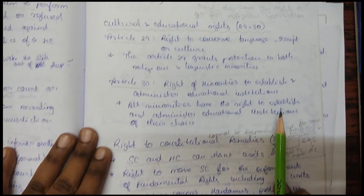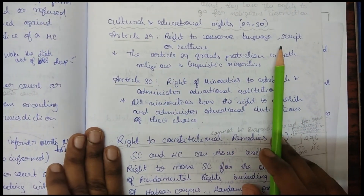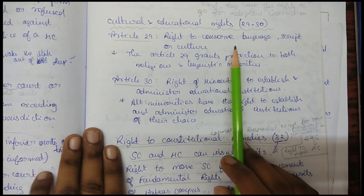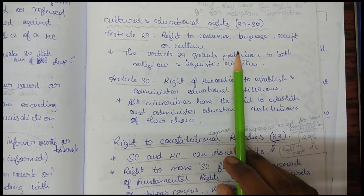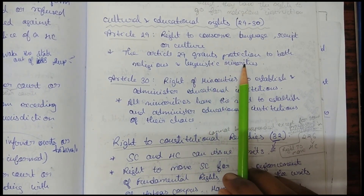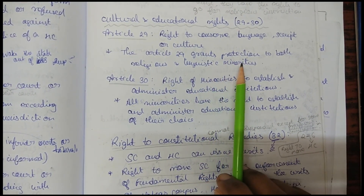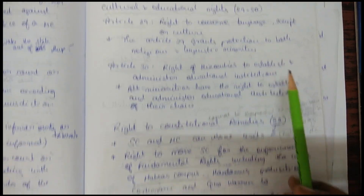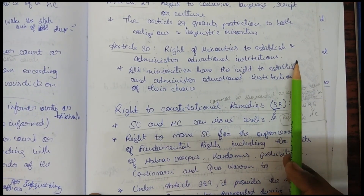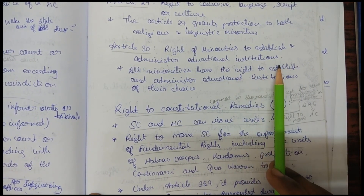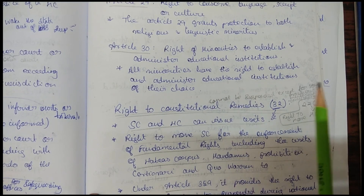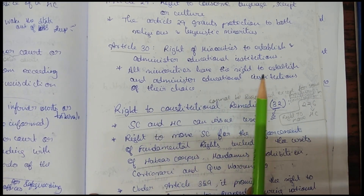Cultural and educational rights are covered in Articles 29 and 30. Article 29 deals with the right to conserve language, script, or culture, and grants protection to both religious and linguistic minorities. Article 30 deals with the right of minorities to establish and administer educational institutions of their choice — all minorities have this right.